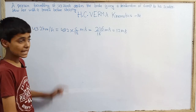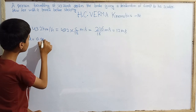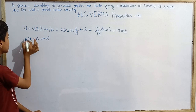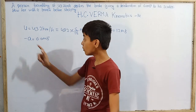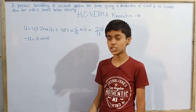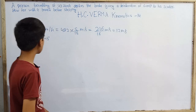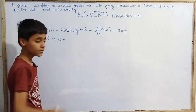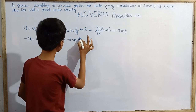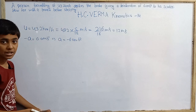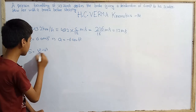The deceleration given is 6.0 m per second square. The important thing to note is that deceleration means negative acceleration. So the acceleration A = −6.0 m per second square. Since we need to find the distance travelled during this time, we will use S = (V² − U²) / 2A, which comes from V² = U² + 2AS.